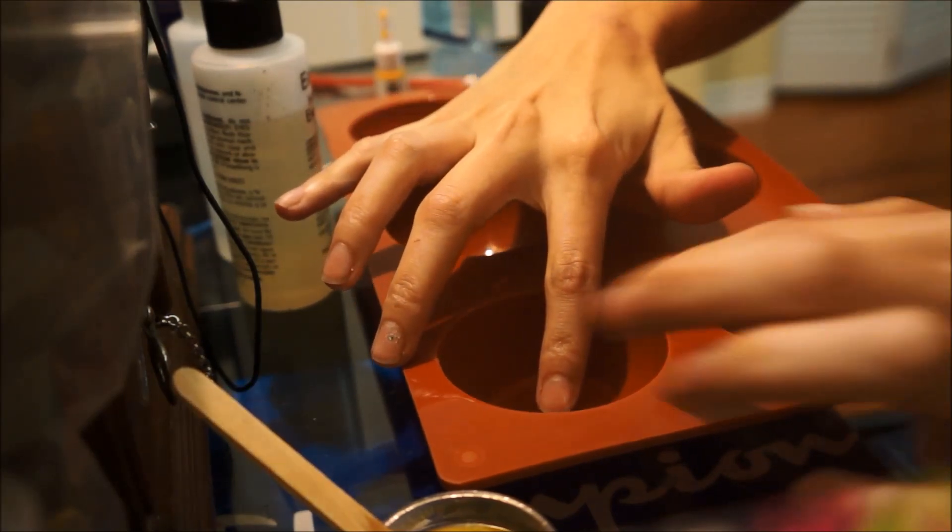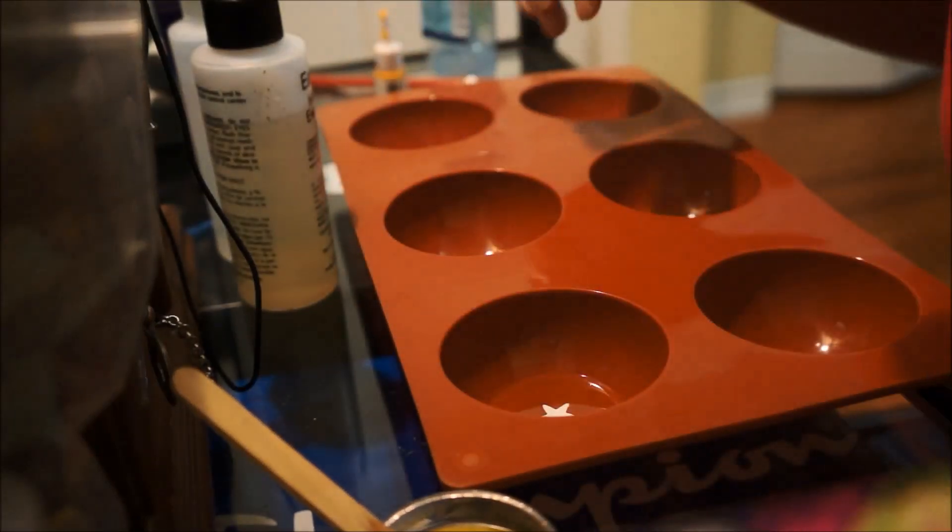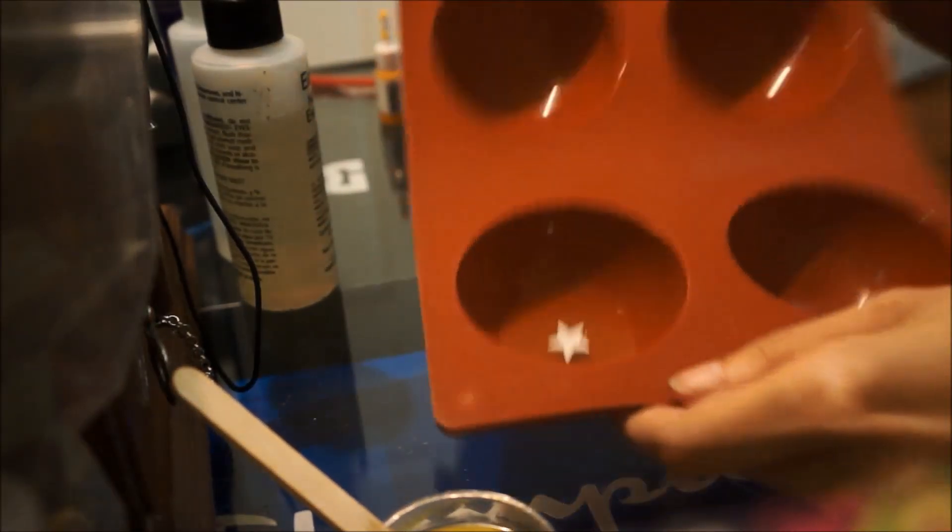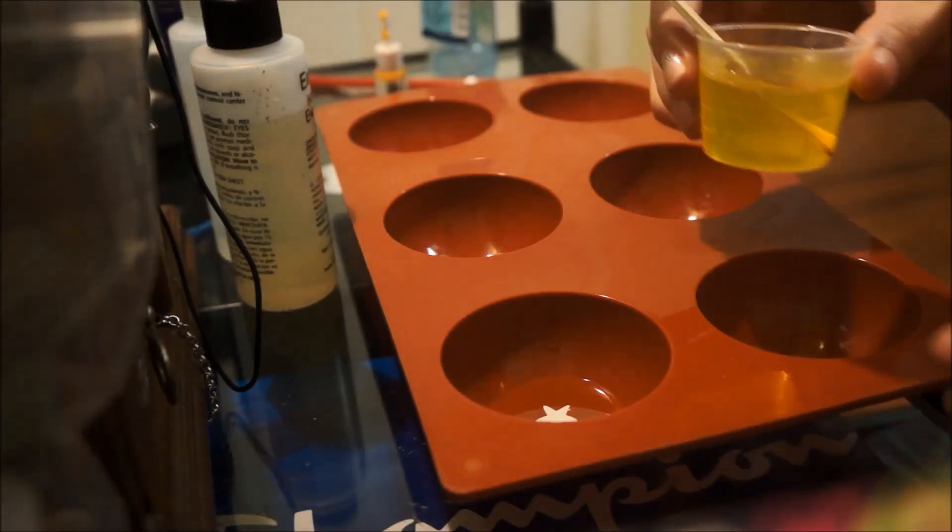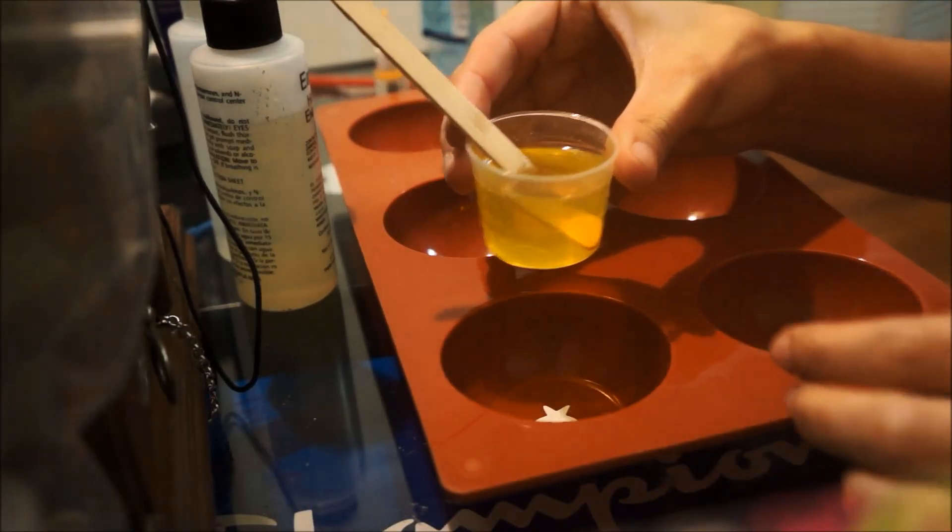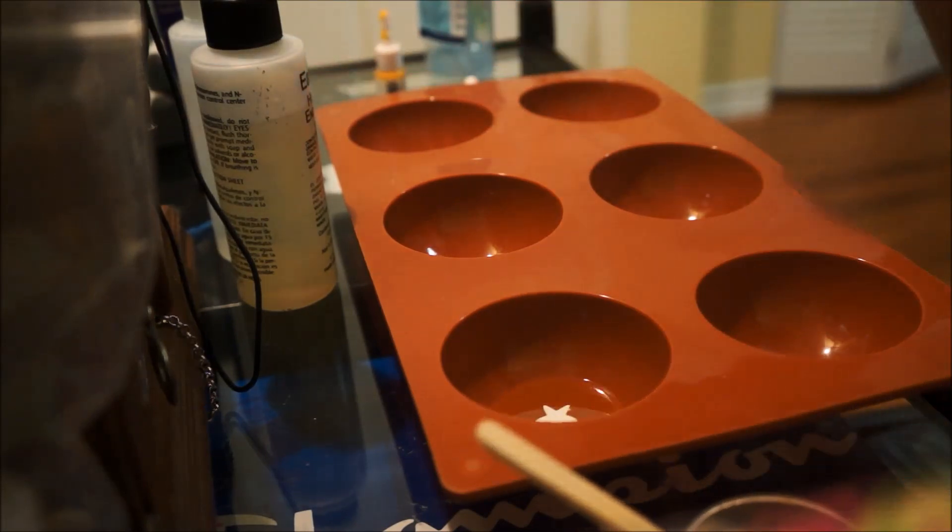For this tutorial I'm just going to do a one star dragon ball. So I just kind of make sure it's centered where I want it. Once you get it centered where you want it, we're going to pour a thin layer of resin over that.